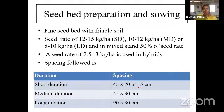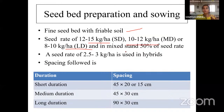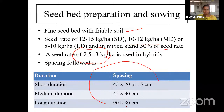For seedbed preparation, a fine seedbed with friable soil is needed. Avoid stones and gravels in the field. Seed rate is 12 to 15 kg per hectare for short duration, 10 to 12 kg for medium duration, and 8 to 10 kg per hectare for long duration. In mixed stand, 50% of seed rate can be used. For hybrids, 2.5 to 3 kg per hectare can be used. Spacing increases with longer duration.